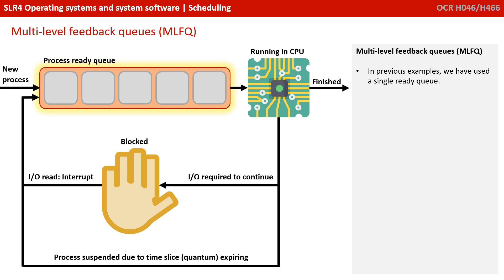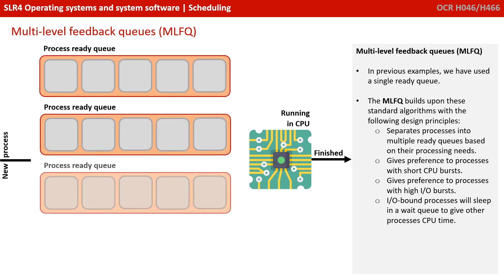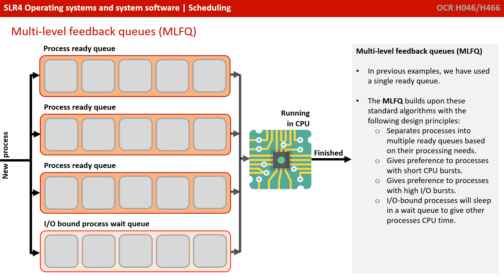Finally, let's look at multi-level feedback queues. In all the previous examples we've been discussing, we've used a single ready queue. The multi-level feedback queue builds upon previous standard scheduling algorithms with the following design principles: it separates processes into multiple ready queues based on their need for the processor; it gives preference to processes with short CPU bursts; and it gives preference to processes with high input-output bursts. Any input-output bound process will sleep in a wait queue to give other processes CPU time.